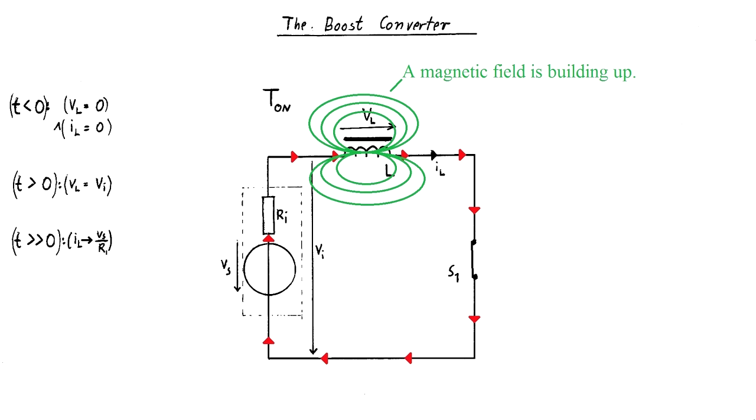After a certain time, the current through the inductor comes very near to the maximum current, only limited by the internal resistance of the source. The system is now in what is called steady state. And the magnetic flux caused by the inductor, like the current through it, are nearly constant.